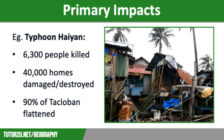Many of you will have studied Typhoon Haiyan in the Philippines as your tropical storm case study. Primary effects here included around 6,300 people killed, with most drowning in the storm surge. 40,000 homes were damaged or flattened and 90% of Tacloban City was destroyed. Tacloban Airport Terminal was badly damaged, 30,000 fishing boats were destroyed, crops were wiped out and power lines were brought down.